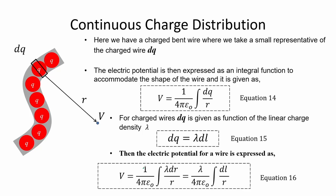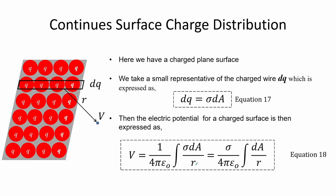For charges having continuous charge distributions we use integral functions. For a charged bent wire we take a small representative element dq. The electric potential is expressed as an integral function given in equation 14. For charged wires, dq is given as a function of linear charge density shown in equation 15, and the electric potential for wires is expressed as shown in equation 16. For continuous surface charge distribution, dq is expressed as a surface charge density shown in equation 17, and the electric potential for a charged surface is given in equation 18.